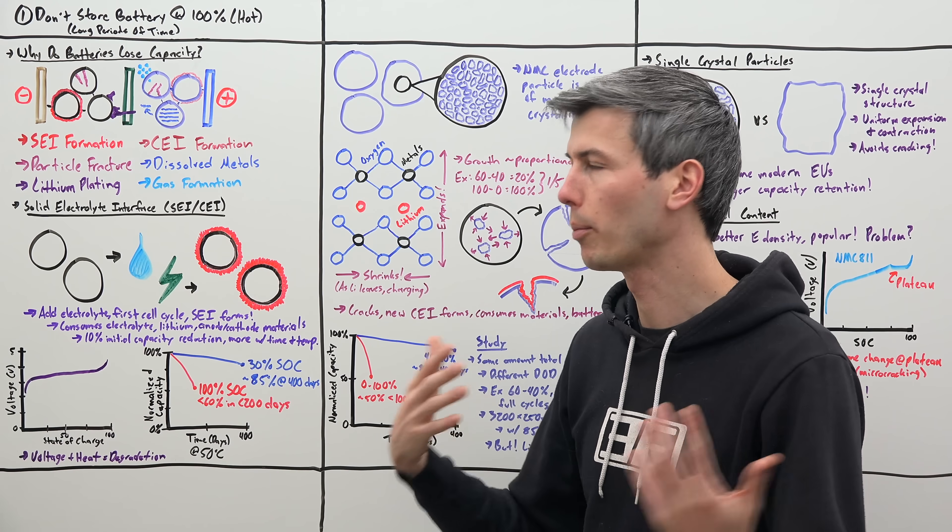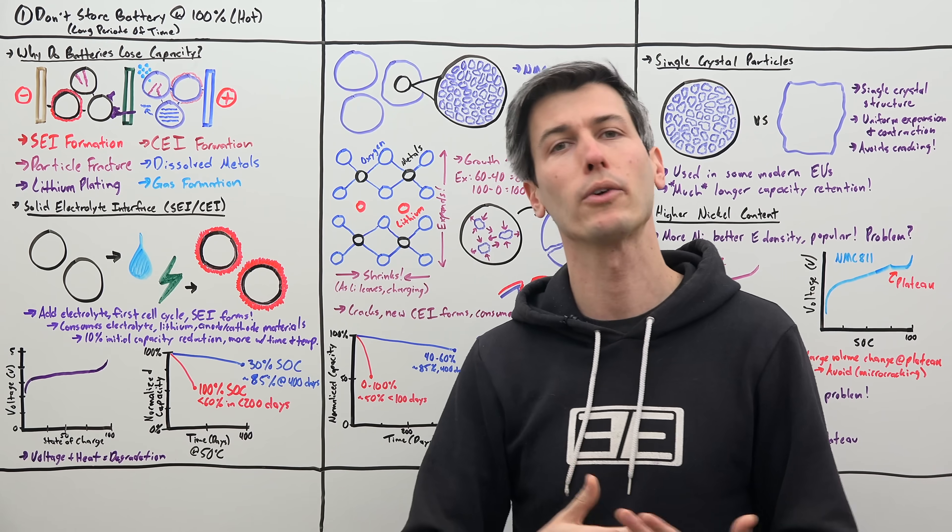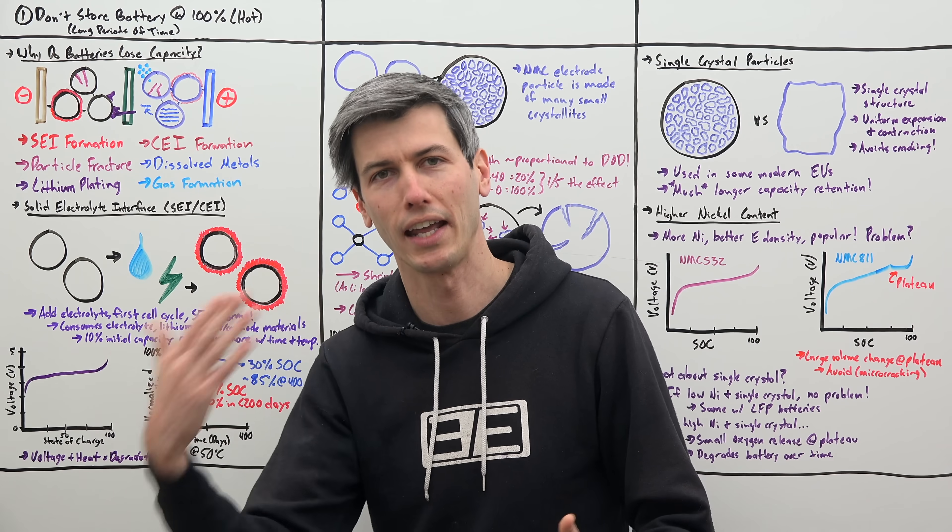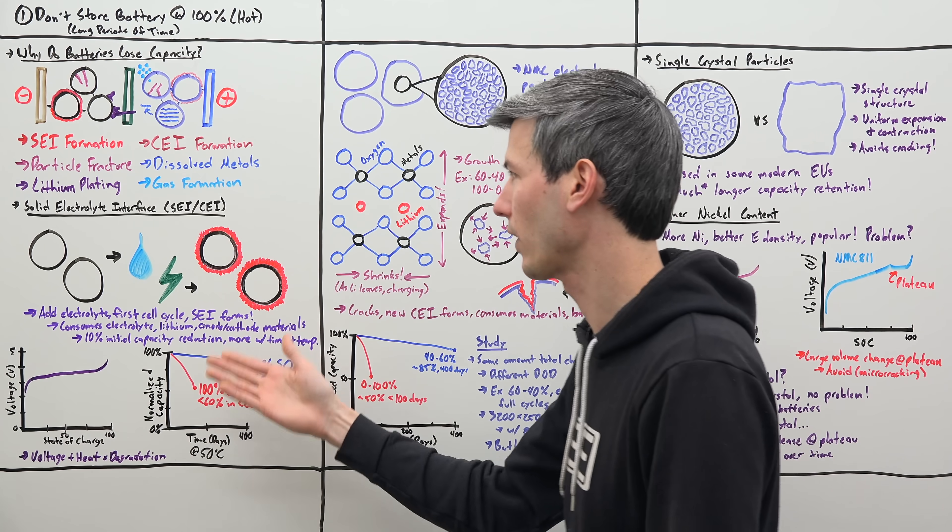these reactions are more prominent and they happen more quickly. So you get more degradation when you have higher temperatures and at a higher voltage, in other words, a higher state of charge.